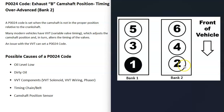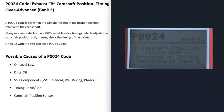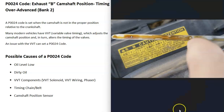With this P0024 code, the bank 2 side of the engine is going to be the one having the issue. The first possible cause is low or dirty engine oil. If the engine oil is low or really dirty, it can cause issues with the variable valve timing, which can trigger this P0024 code. So first, check your engine oil — make sure it's at the correct level and not excessively dirty.